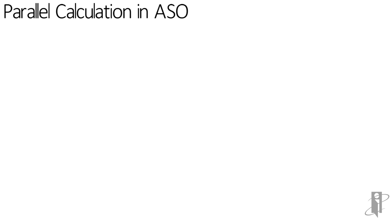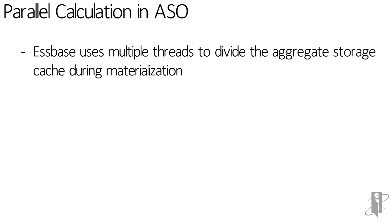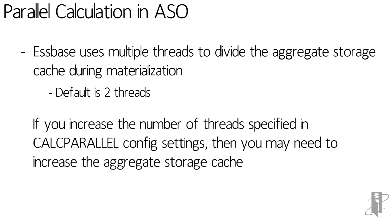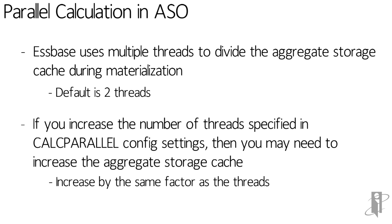Parallel calculation isn't limited to just block storage. We also have calculation in ASO that happens when we're materializing upper levels. The default for this one actually isn't one — it makes the assumption you're going to have at least two CPUs, so the default for parallel calculation on ASO is a massively impressive two instead of one. Be really careful because the aggregate storage cache is divided between each thread that you launch. So if you increase calc parallel on an ASO cube, you're probably going to want to increase the aggregate storage cache as well — if you set the threads to 10, you might need to increase the aggregate storage cache by five to ten times.